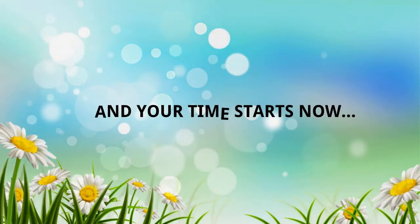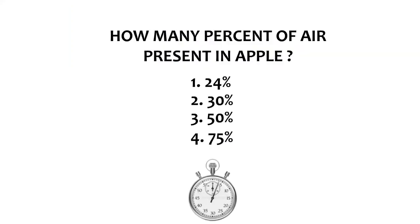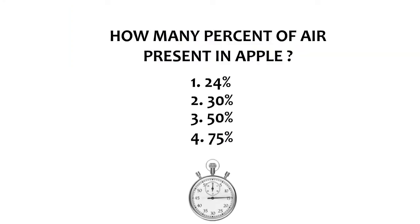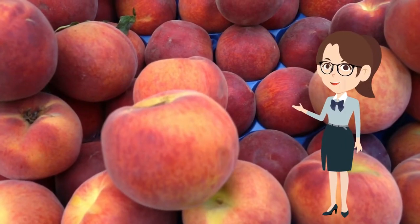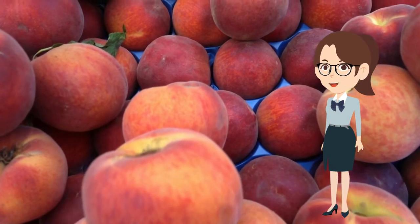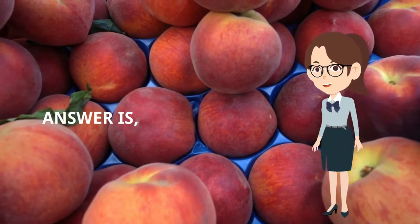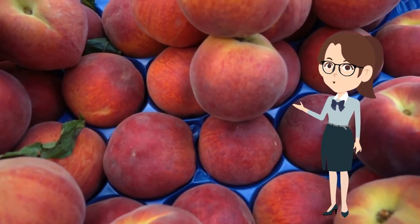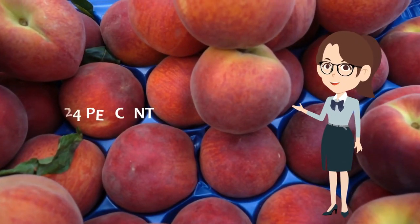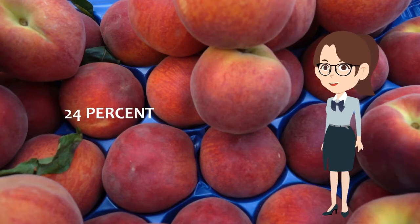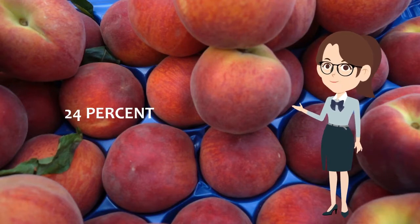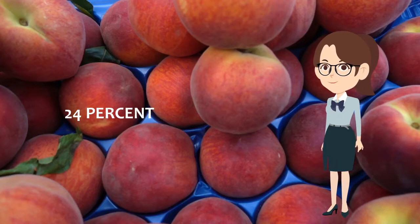Your time starts now. Now we will see the first intermediate level question's answer. The correct answer is Option 1 — can you remember? The answer is 24. In an apple, there is 24 percent air, which is why an apple never sinks in water. Keep the answer in mind — it may be useful to you!